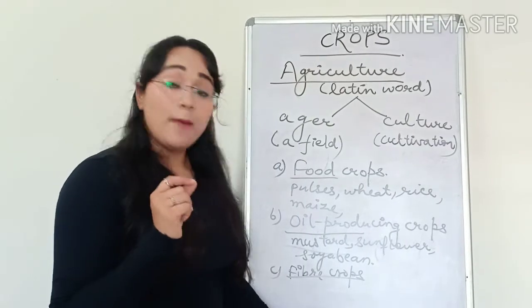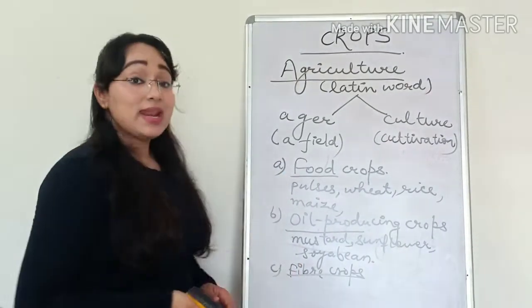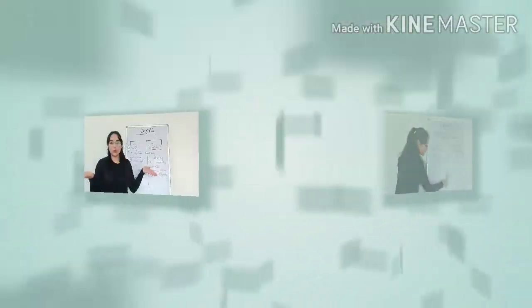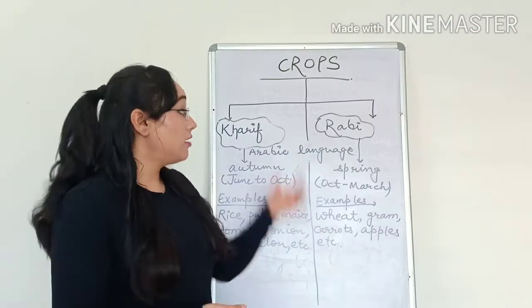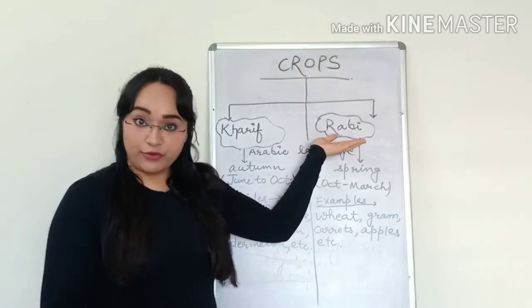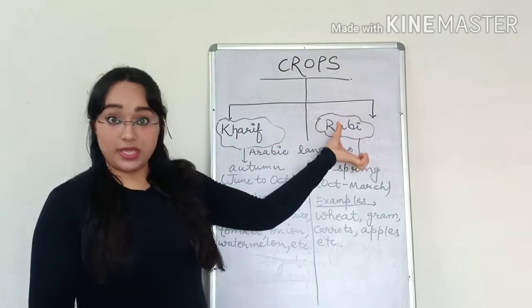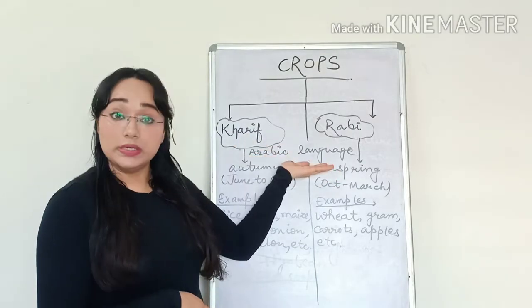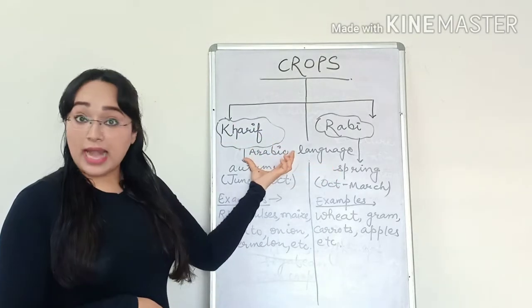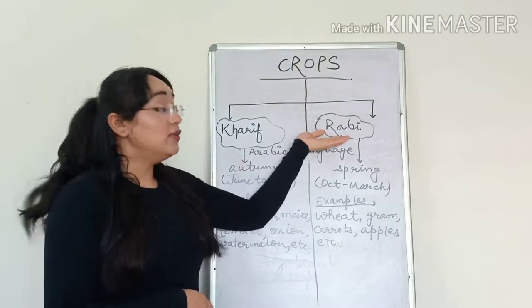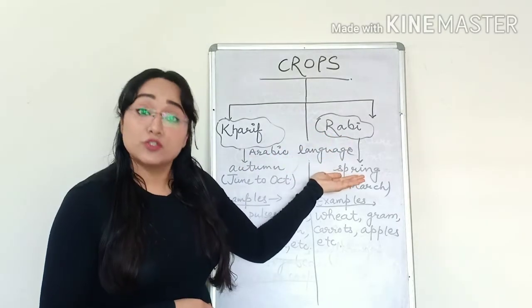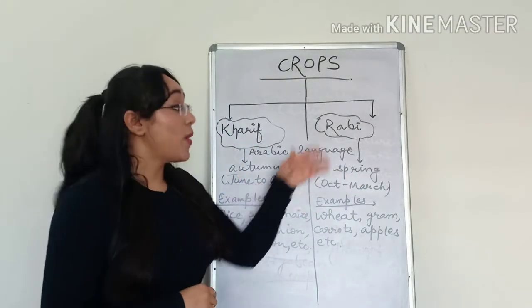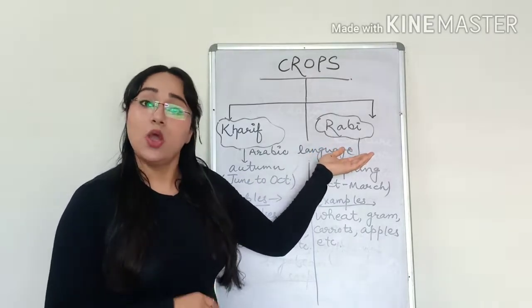Now, depending upon the season in India, we can have two different kinds of crops. The two crops grown in India mainly are kharif crops and rabi crops. Kharif and rabi, these words are taken from Arabic language. Kharif in Arabic language means autumn and rabi means spring. Kharif crops are mainly grown in summer season, whereas rabi crops are mainly grown in winter season.